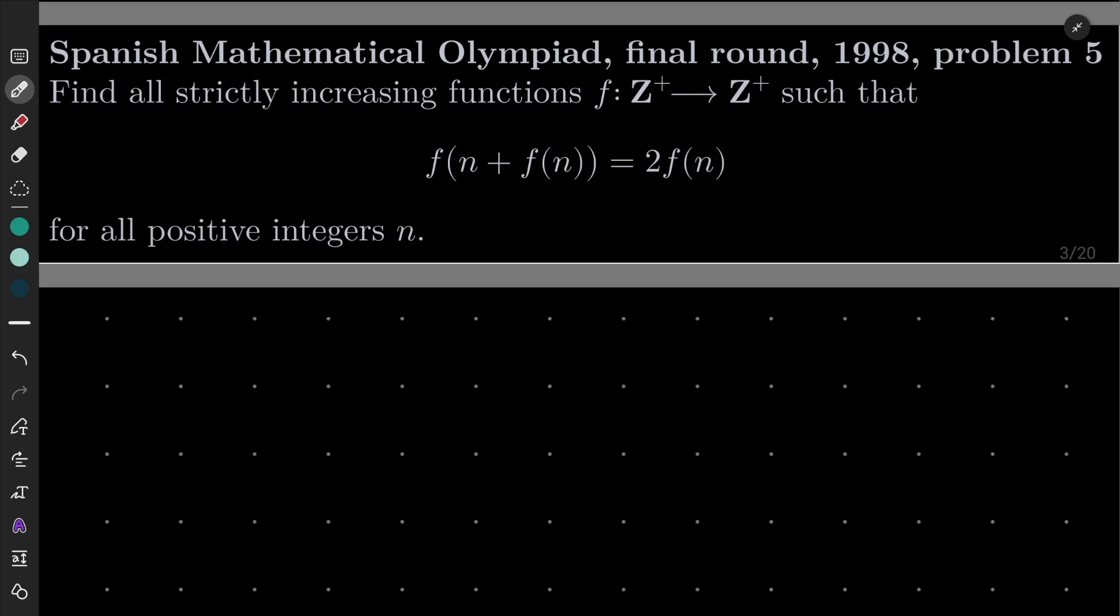We wish to find all strictly increasing functions from the set of positive integers into itself, such that f(n + f(n)) = 2f(n) for all positive integers n.